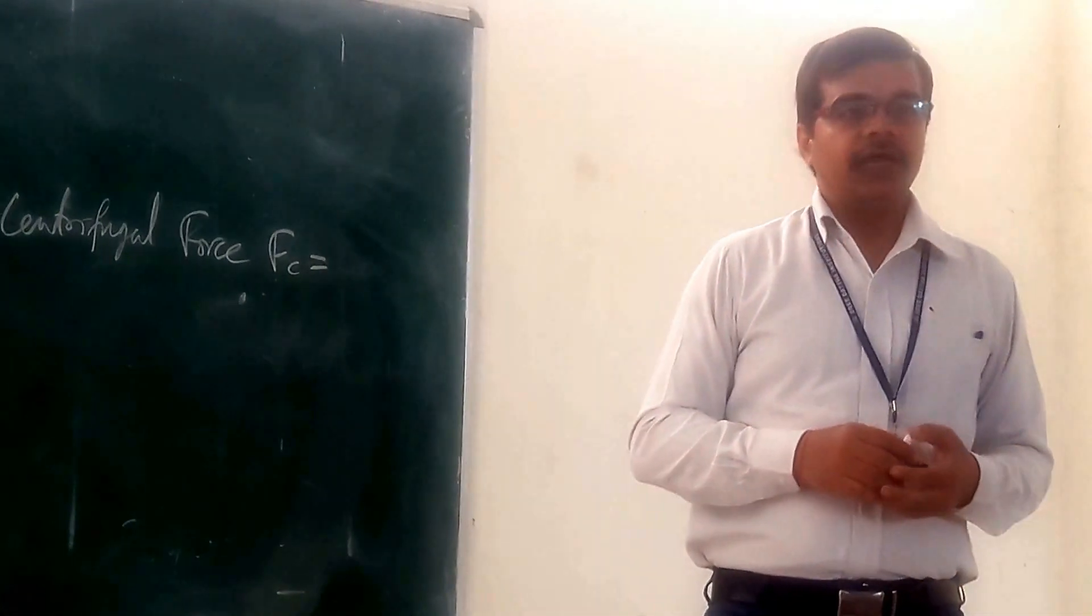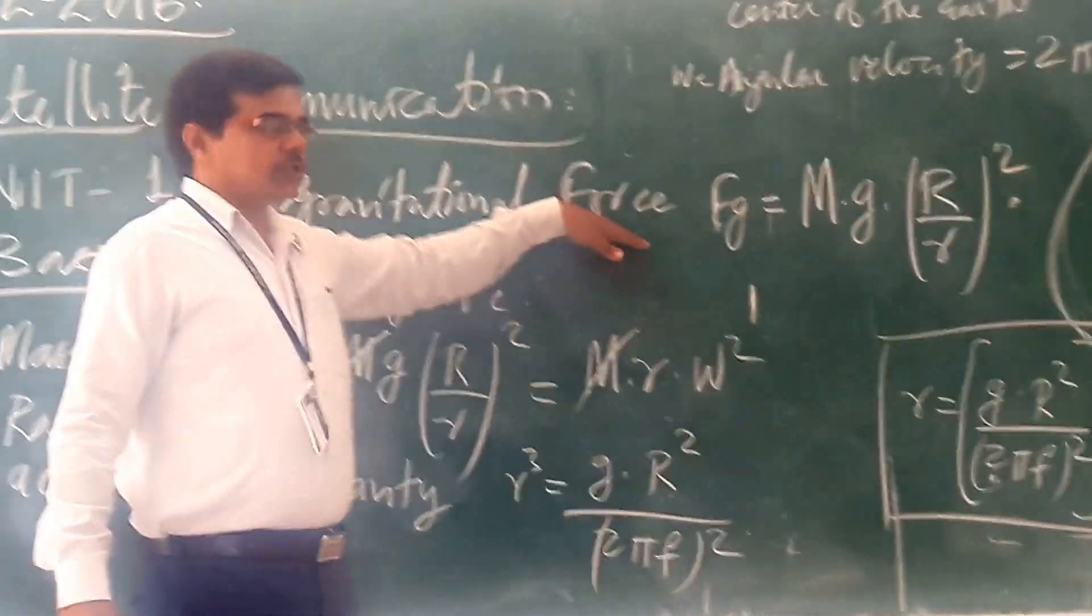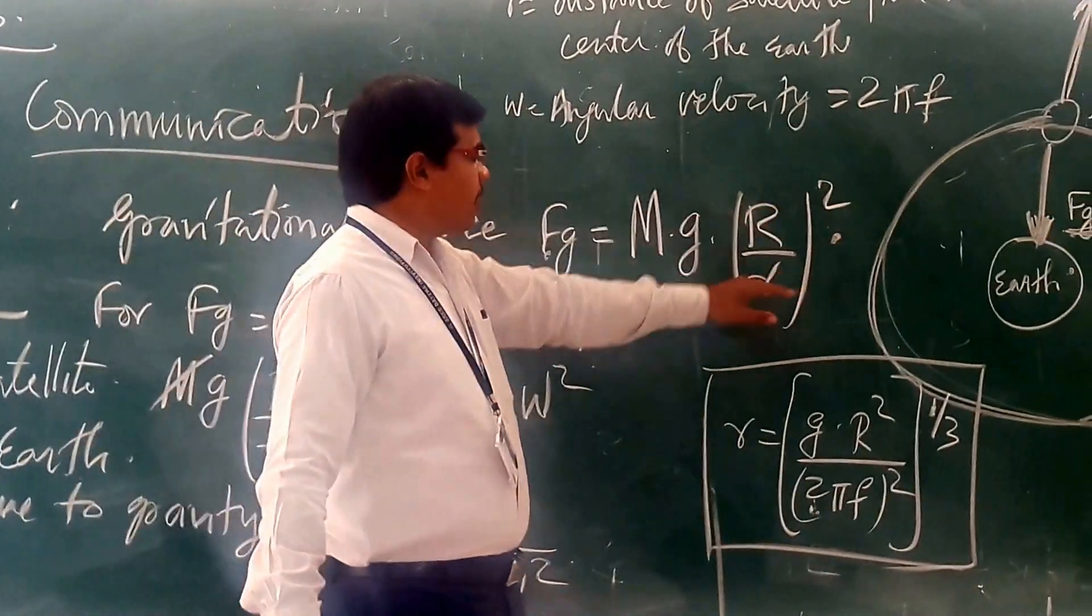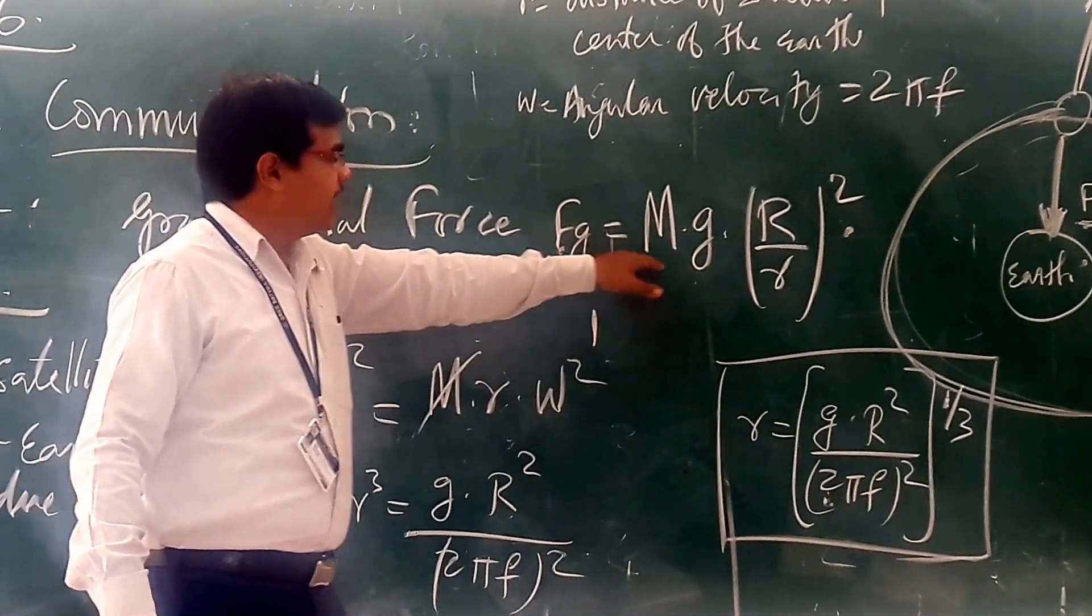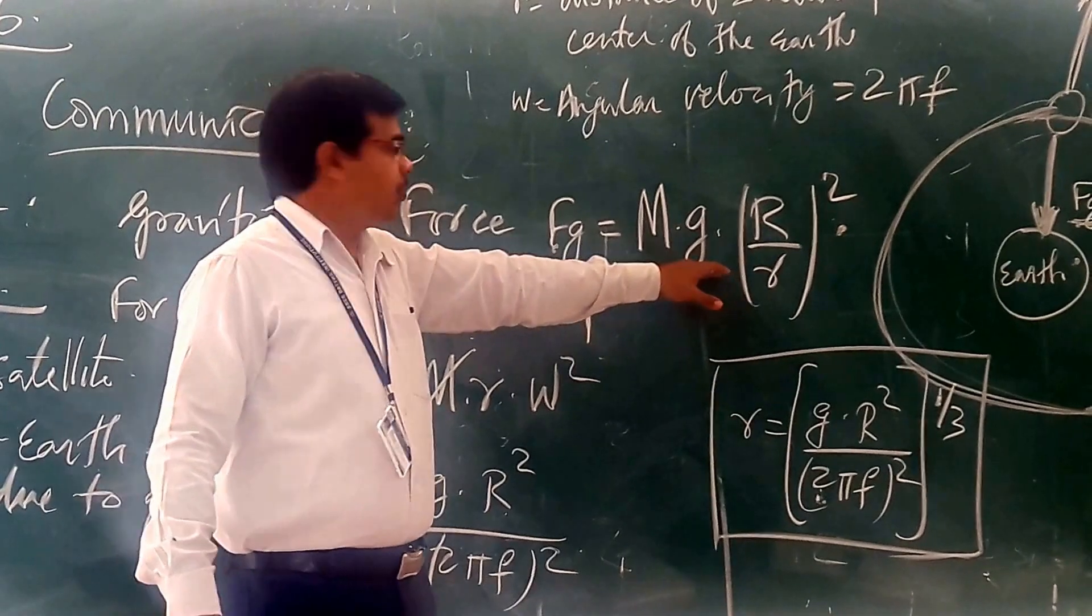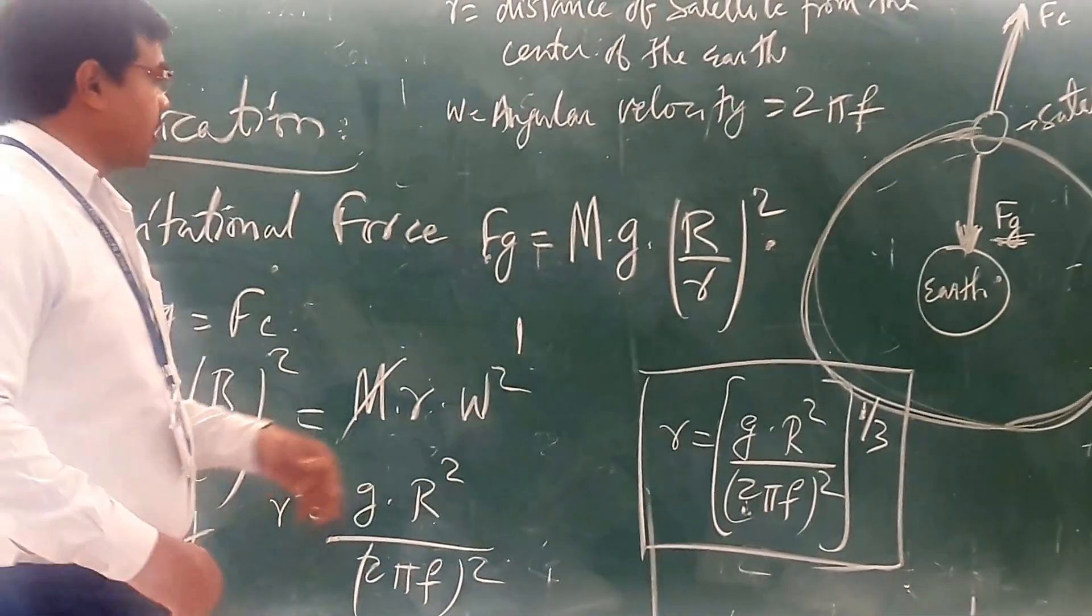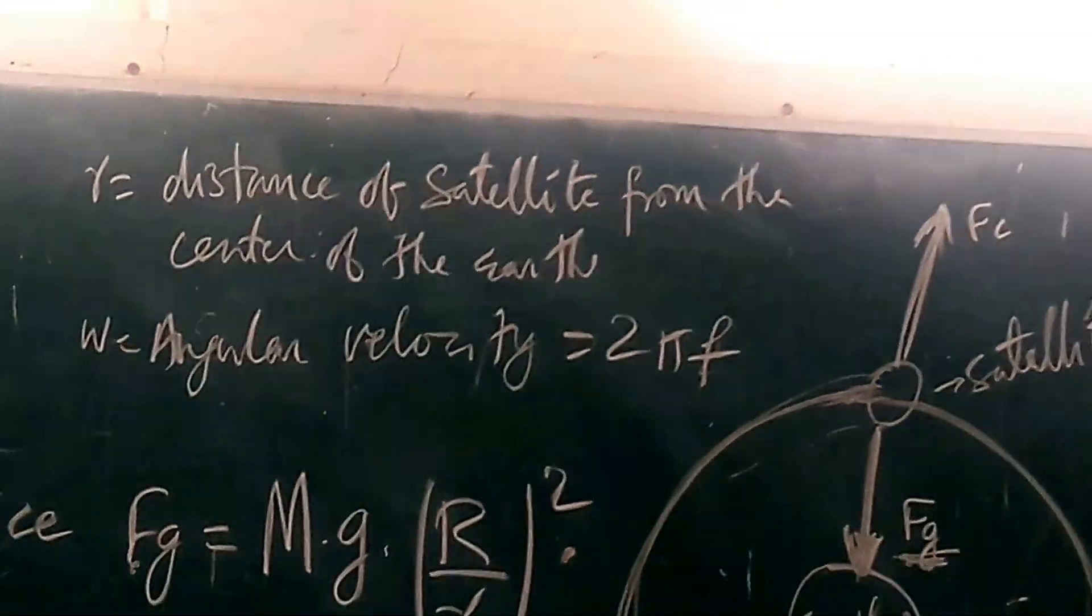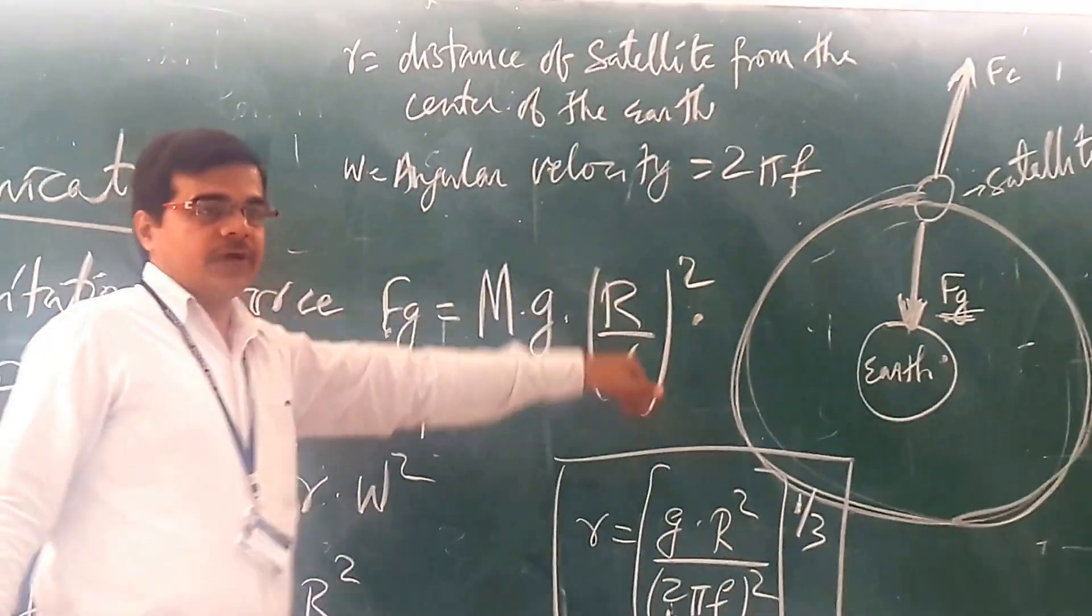Let us see the equation related to this. The gravitational force, Fg, is equal to mg capital R squared over small r squared. Here m is the mass of the satellite, g is the acceleration due to gravity, capital R is the radius of the Earth, and small r is the distance of the satellite from the center of the Earth.